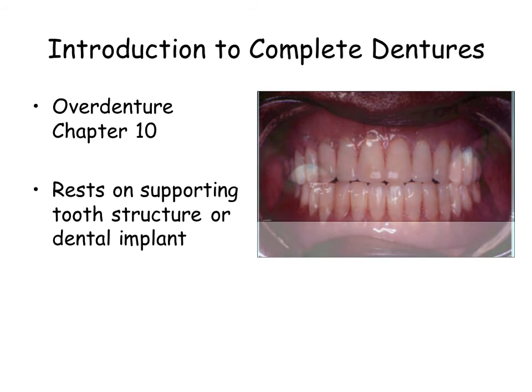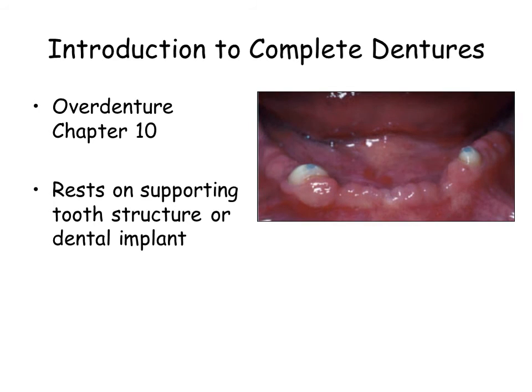The overdenture is a restoration which rests on supporting tooth structure or dental implant. Advantages of the overdenture are maintenance of residual ridge integrity, enhanced stability and retention, and positive patient perceptions. A disadvantage is possible eventual loss of abutments due to caries and periodontal disease, and space limitations imposed in placing the overlying denture tooth.